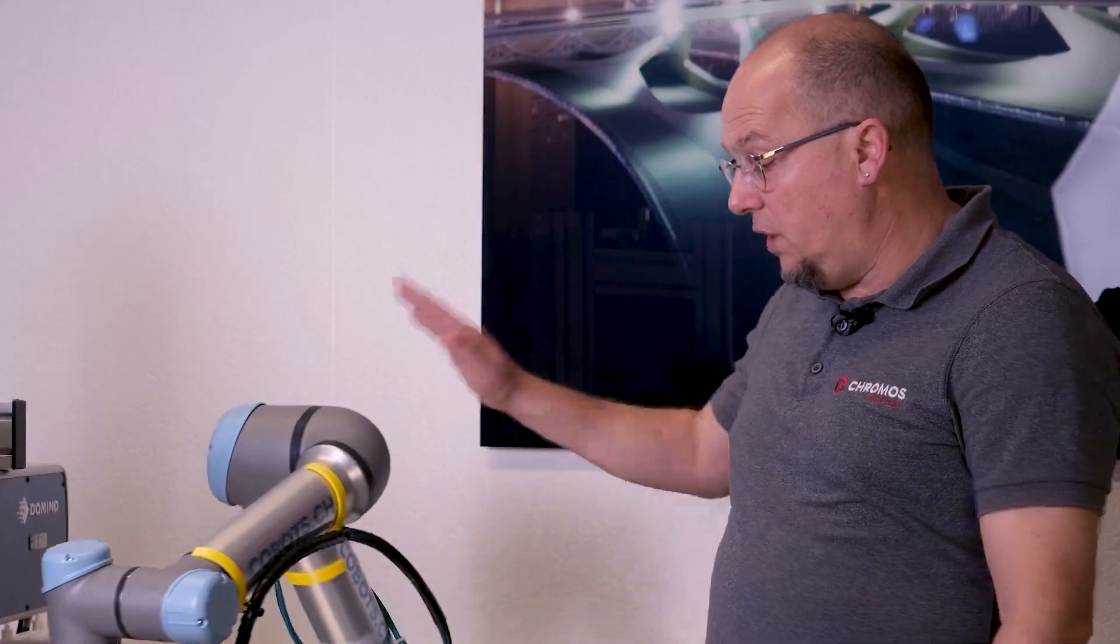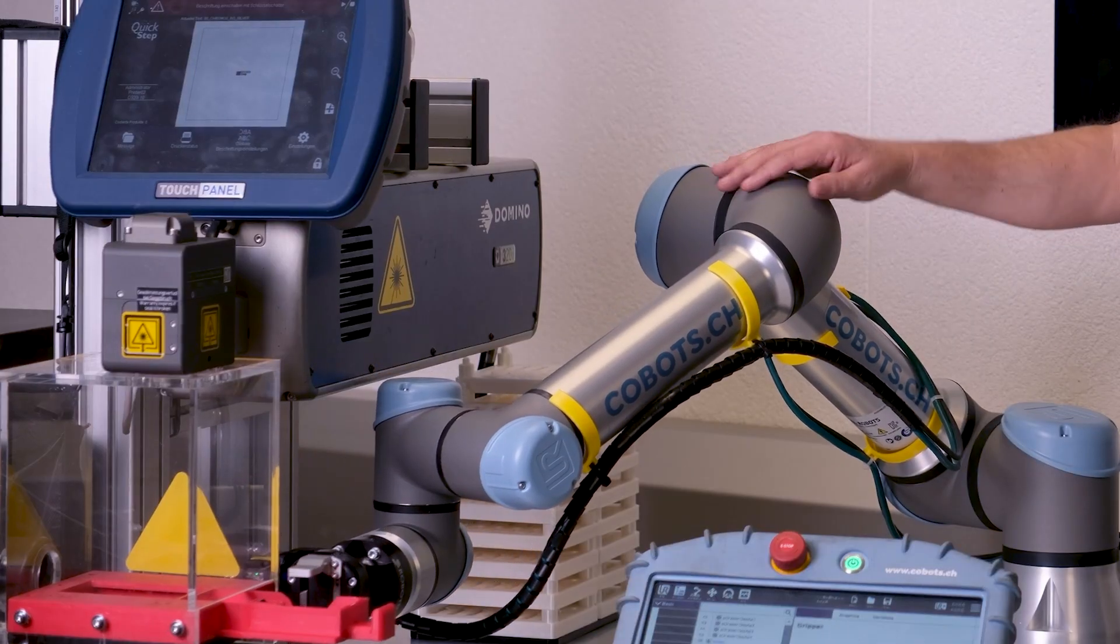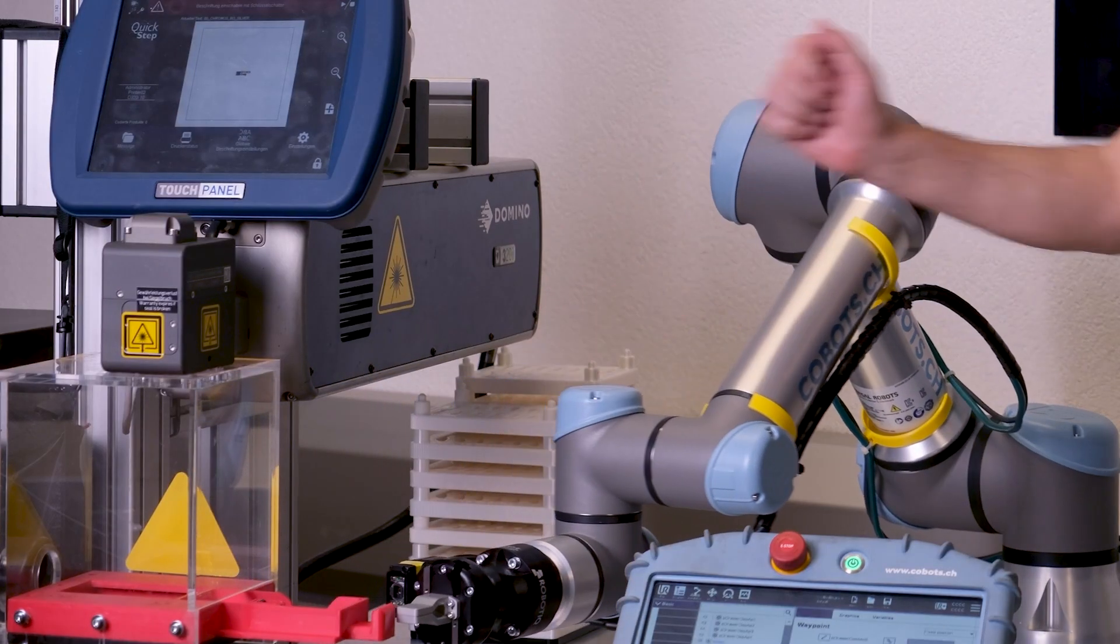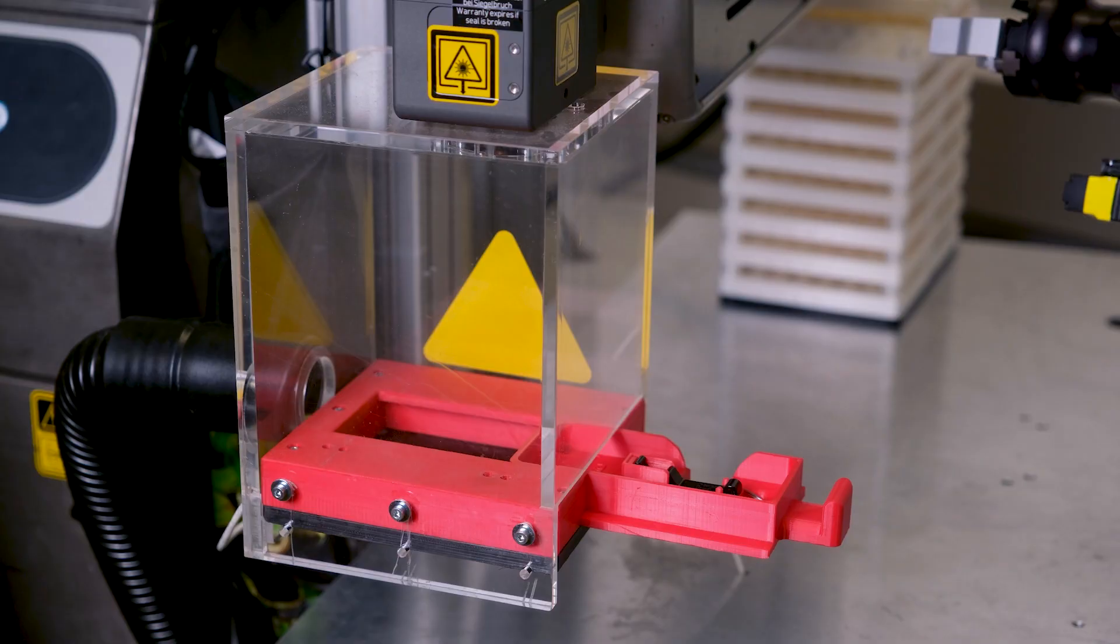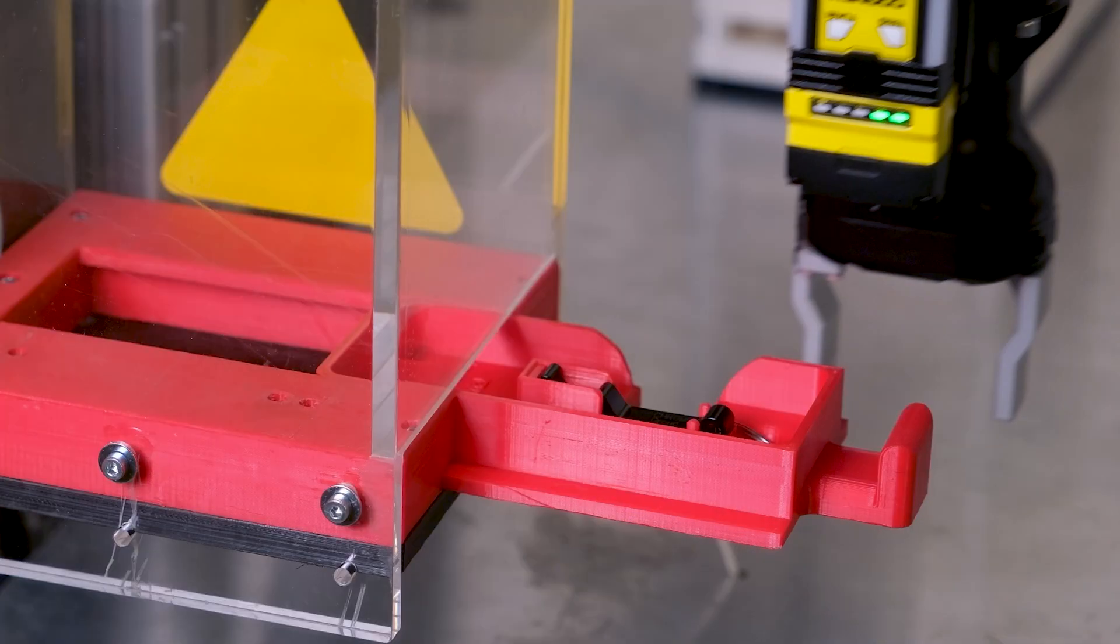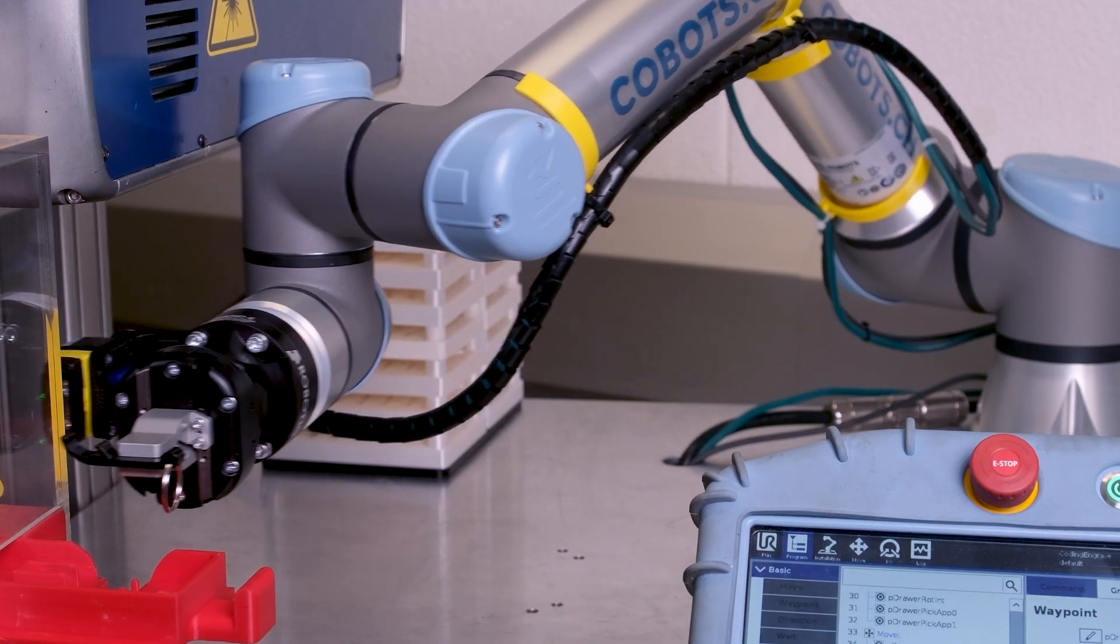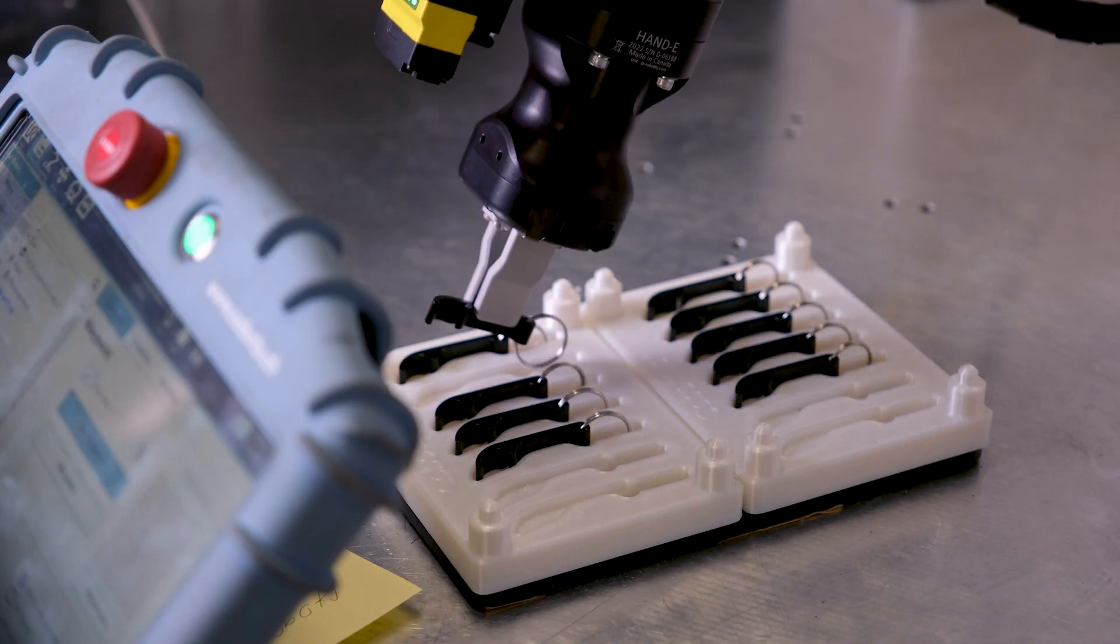Our station consists of a cobot from Universal Robot, a barcode reader from Cognex, and a CO2 laser from Domino. With the barcode reader, we check the quality of the engraved QR code and relocate the parts for further processing.